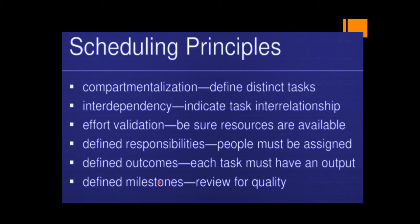We have to define the milestones. This will be done using reviews for quality. When you have fixed the milestones, at every point in time we can check about the quality — how much progress we have made at a particular duration of the project. That is defining the milestone. These are all the principles on which scheduling can be done.